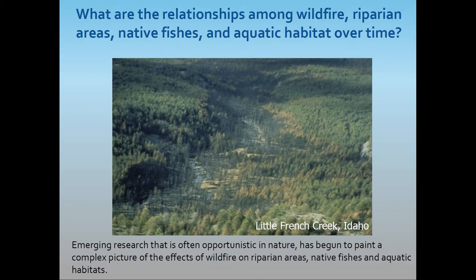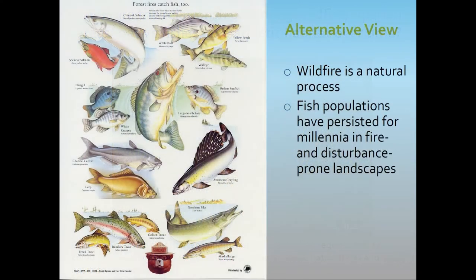Just as we have fire-adapted trees and vegetation, so too are we finding natural adaptations in fish populations allowing them to survive and thrive in the years following wildfire — though there are certainly limits, such as when populations are restricted to small areas or isolated from other populations. The observations in the literature lead to an alternative view: first, that wildfire is a natural process, and second, that fish populations have persisted for millennia in fire- and disturbance-prone landscapes.